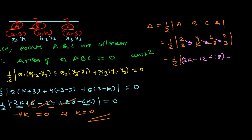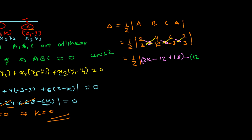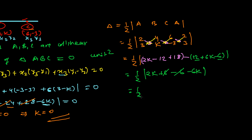Now subtract the southwest diagonals: 4 times 3 = 12, plus 6 times k = 6k, plus 2 times (−3) = −6. So the expression becomes one-half times [(2k − 12 + 18) − (12 + 6k − 6)]. Simplifying inside: (2k + 6) minus (6 + 6k). The +6 and −6 cancel, leaving one-half times (2k − 6k) = one-half times (−4k).